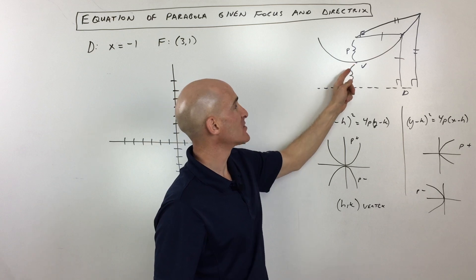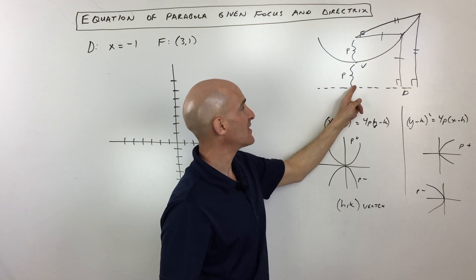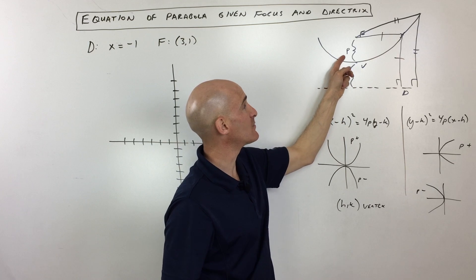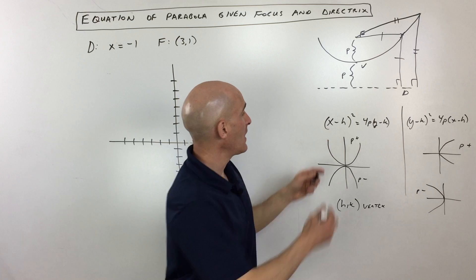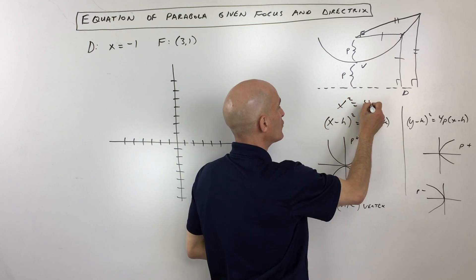The other component of parabolas is this distance between the vertex and the directrix and the vertex and the focus. We call that distance p, and the basic equation of a parabola is in the form x squared equals 4py.